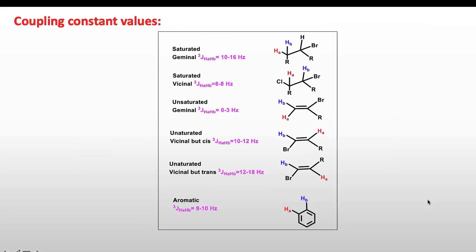This table gives information about different types of coupling constants between two neighboring protons, whether they are geminal protons or vicinal protons. Geminal protons on saturated carbon have 10 to 16 Hz coupling constant. Vicinal protons have 6 to 8 Hz coupling. Geminal protons on unsaturated carbon have a smaller coupling constant of 0 to 3 Hz. Unsaturated vicinal protons in cis conformation have 10 to 12 Hz, and trans conformation gives 12 to 18 Hz. For aromatic compounds the coupling constant is 8 to 10 Hz.